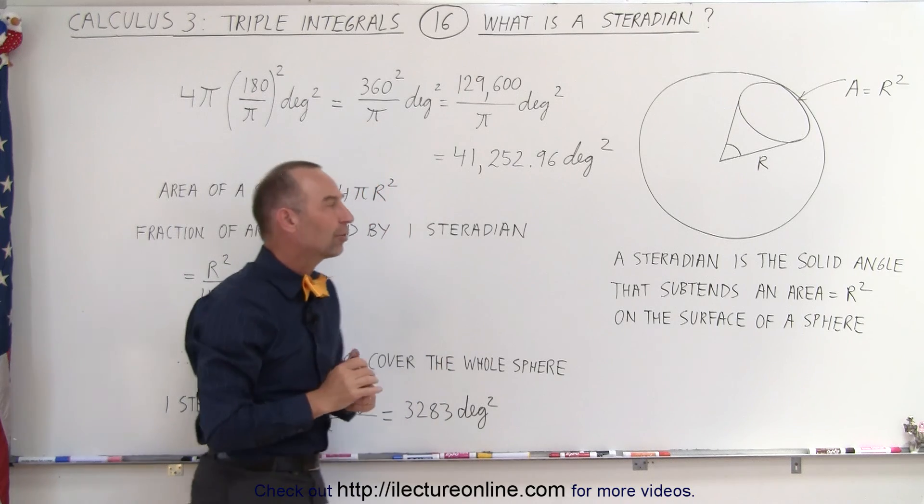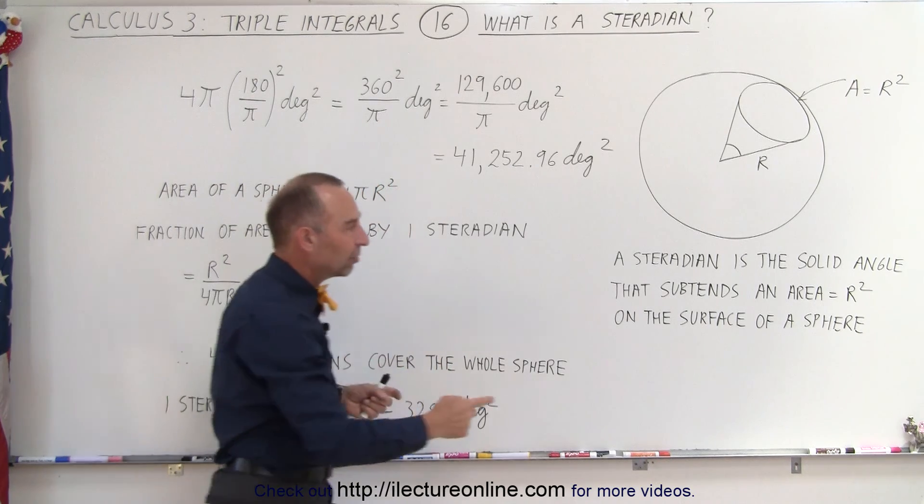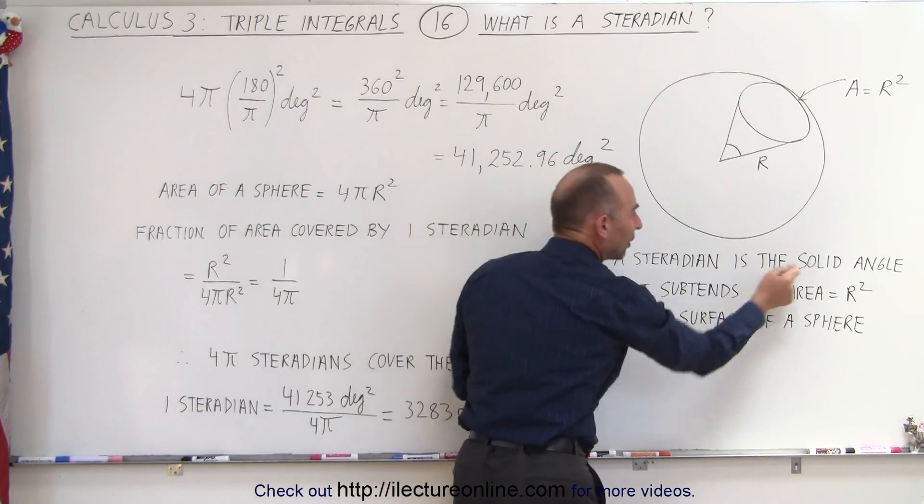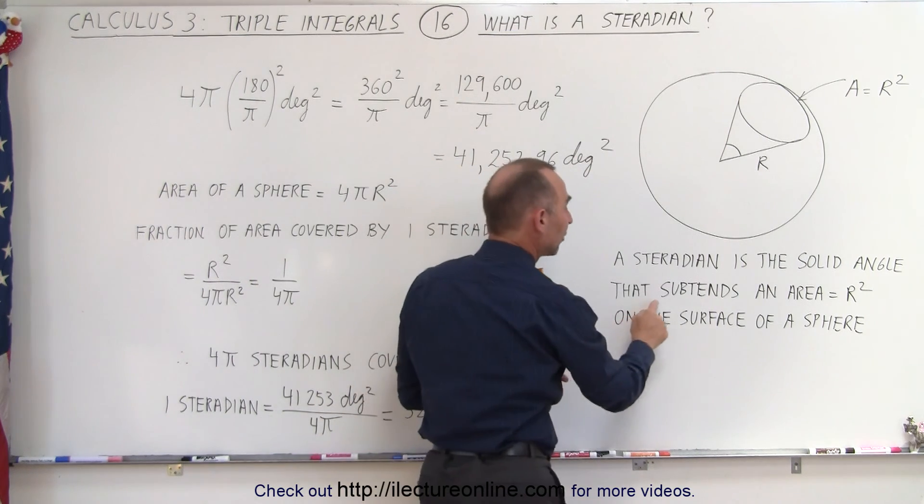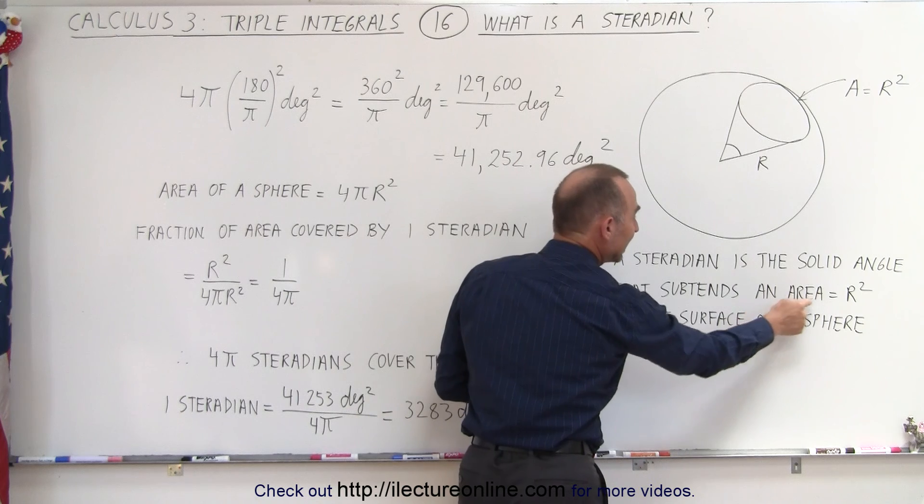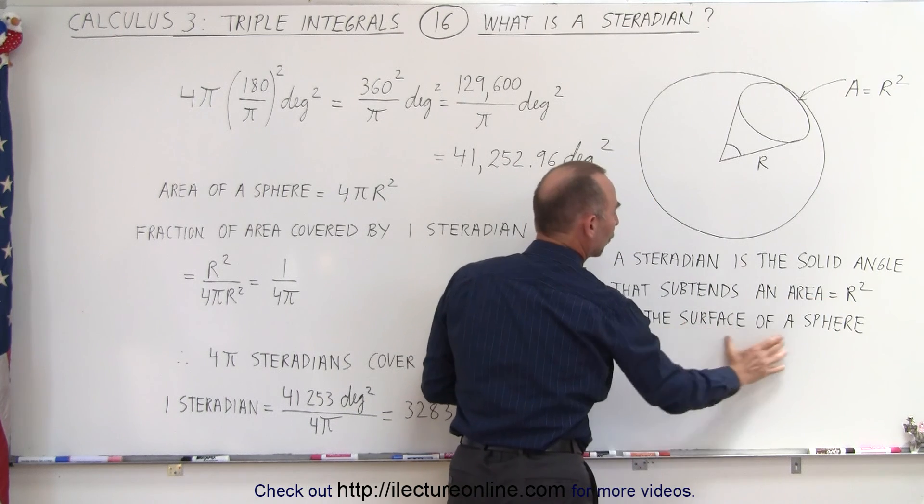becomes the concept of a steradian. So we can say that the steradian is the solid angle, and by solid angle we mean two-dimensional angle,